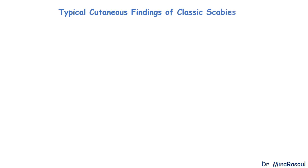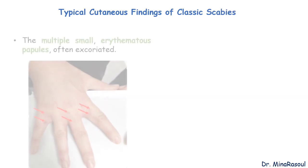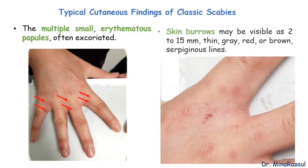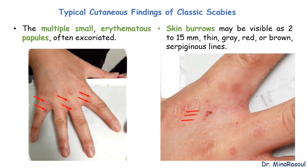Typical cutaneous findings of classic scabies are multiple small erythematous papules, which are often excoriated. Another typical cutaneous finding is skin burrowing, which may be visible as 2-15 mm thin, gray, red, or brown serpiginous lines. It is important to note that burrows are a characteristic finding of classic scabies but often are not visible.